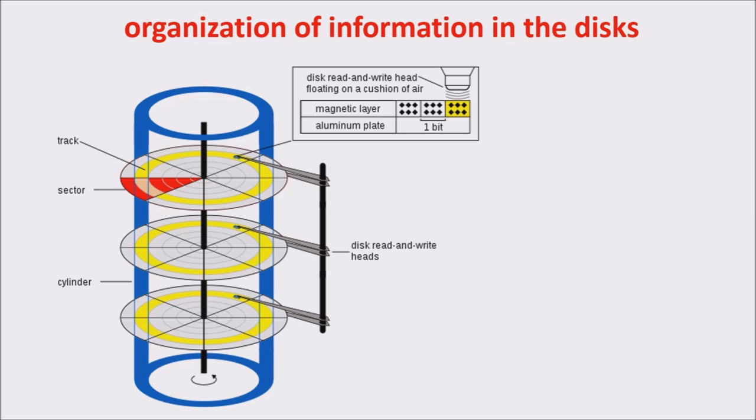A cylinder is the collection of all tracks at the same distance from the edge of the platter. We have two heads for each platter, one for the top face and one for the bottom face. To select a track sector, I need three data: first, the cylinder; second, the heads; and third, the sector.